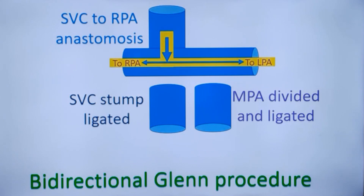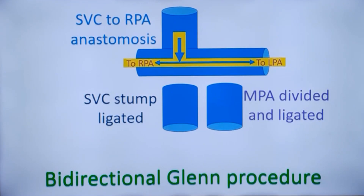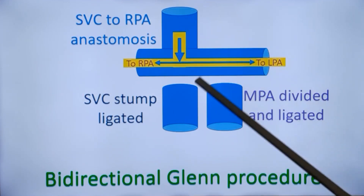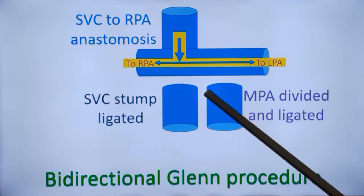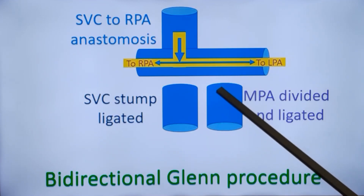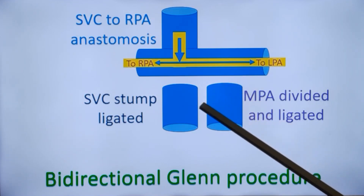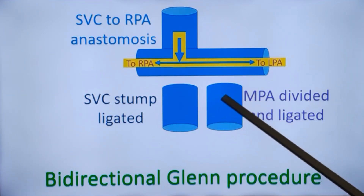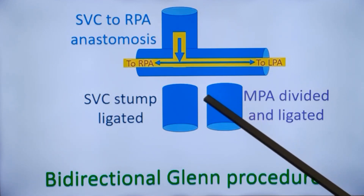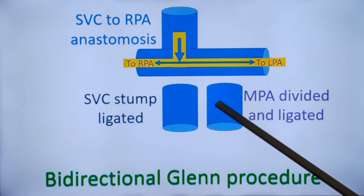This will improve systemic oxygen saturation as pulmonary blood flow is increased. There is no risk of development of increased pulmonary vascular resistance later on, because the driving force is only the systemic venous pressure — unlike the Blalock-Taussig shunt or other systemic artery to pulmonary artery anastomoses, where in the long run there is a chance of increased pulmonary vascular resistance if the flow is more than required.